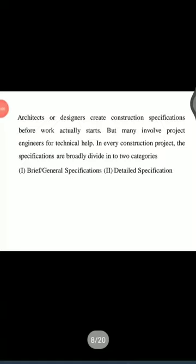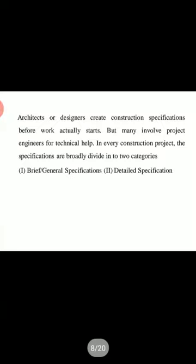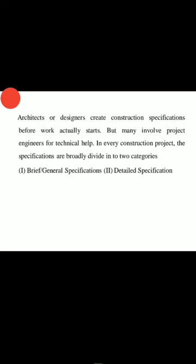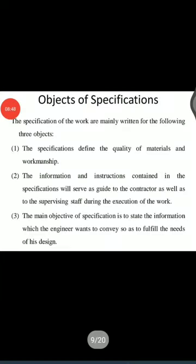Architects, designers, or engineers create the construction specification before work actually starts, but many involve engineers for technical help. In every construction project, specifications are broadly divided into two categories: one is brief or general specification, and the second is detailed specification. The brief specification gives a brief idea about the material to be used in the measurement sheet during estimation, while the detailed specification covers use of material, maintaining quality, and execution.